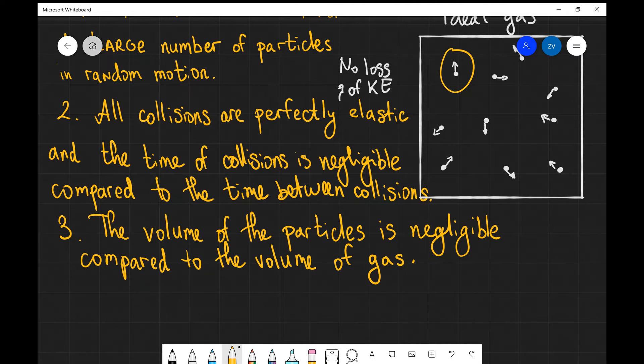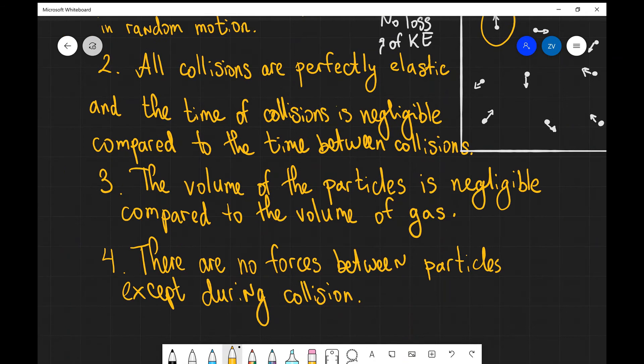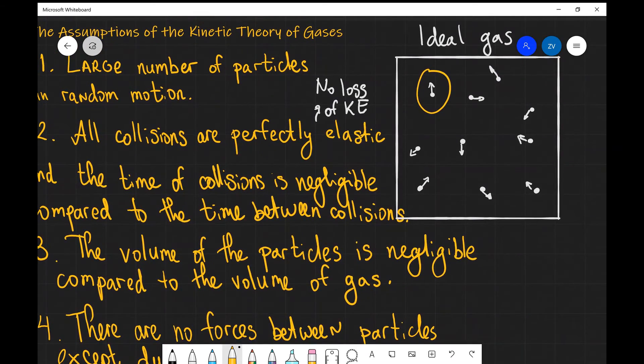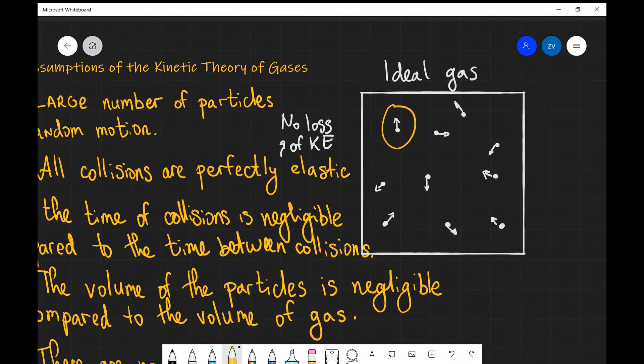That means that those particles are incredibly small. Our final assumption, number four, is that there are no forces between the particles except during collision. This is really significant because normally there is an attractive electrical force between the particles in many substances that keeps the structure together. In the case of gas, that's not the case.